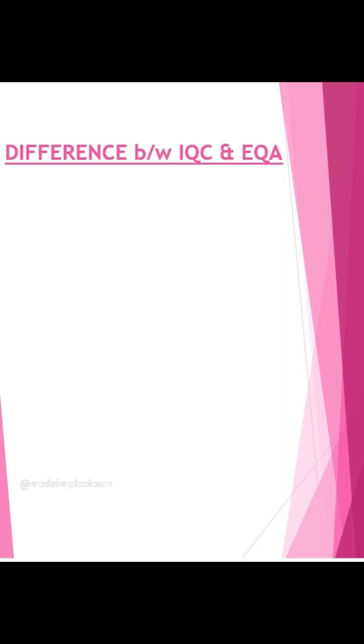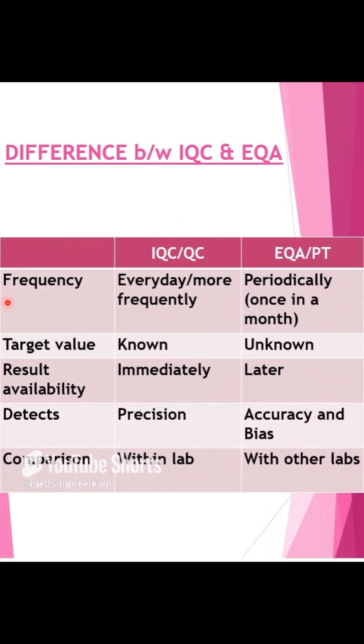Hello friends, through this short video let us understand the difference between IQC, that is internal quality control, and EQA, that is external quality assessment. The first difference is frequency. Depending on the sample load of a laboratory, IQC is generally done once, twice, or thrice a day — that is, frequently — while EQA samples are generally run periodically, once in a month.